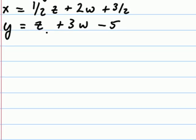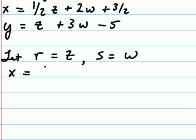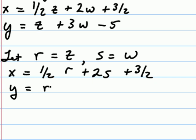The next step would say to introduce new variables for each variable that appears on the right hand side of the equations. And so let's introduce two new variables. Let r represent the variable z and let s represent the w. I can then rewrite my system as x equals 1 half r plus 2 s plus 3 halves. y equals r plus 3 s minus 5. And by our assumption we would say z is equal to r and w is equal to s.